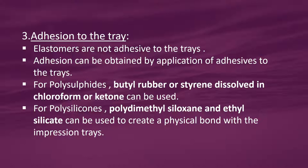Adhesion to the tray: elastomers are not adhesive to the tray. Adhesion can be obtained by application of adhesives to the tray. For polysulphides, butter rubber or styrene dissolved in chloroform or ketone can be used. For polysilicones, polydimethylsiloxane and ethyl silicate can be used to create a physical bond with the impression tray.